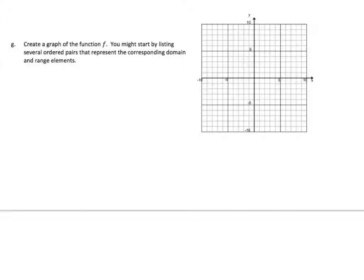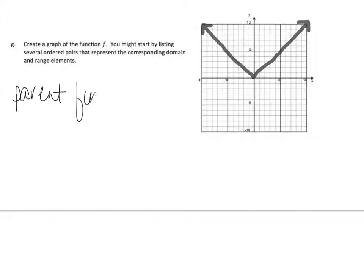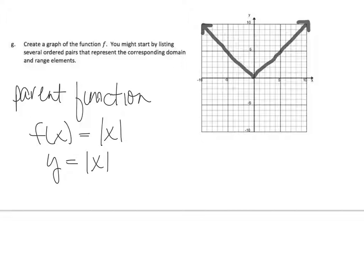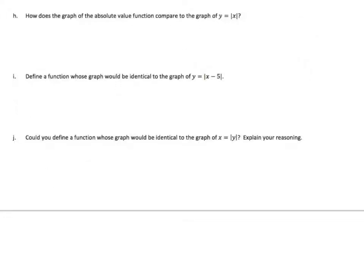Here we're going to create a graph of the function. We already listed ordered pairs in the opening exercise. This is actually called our parent function for f of x equals absolute value of x — the graph being y equals absolute value x. It's the most basic, plain Jane form.